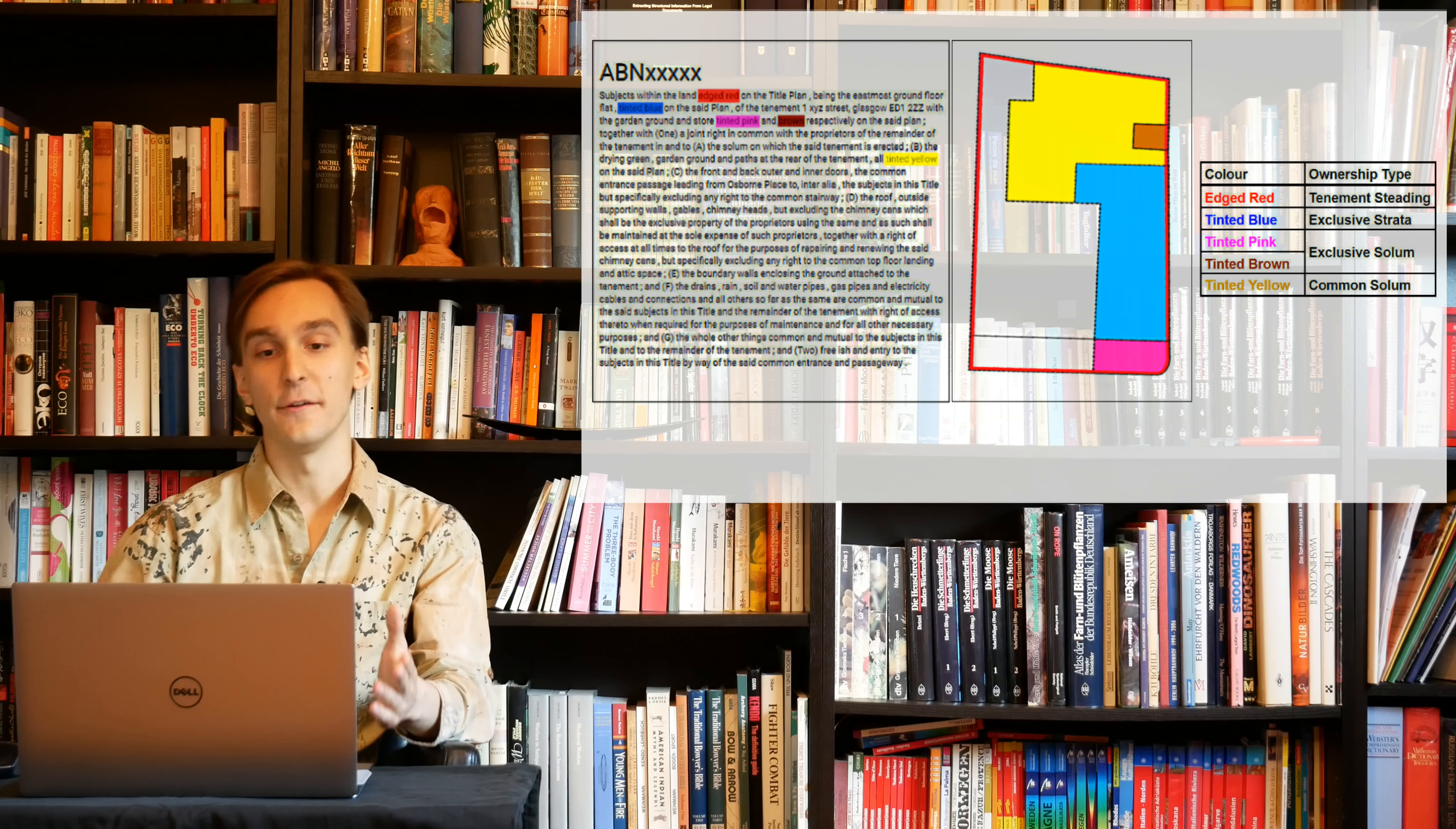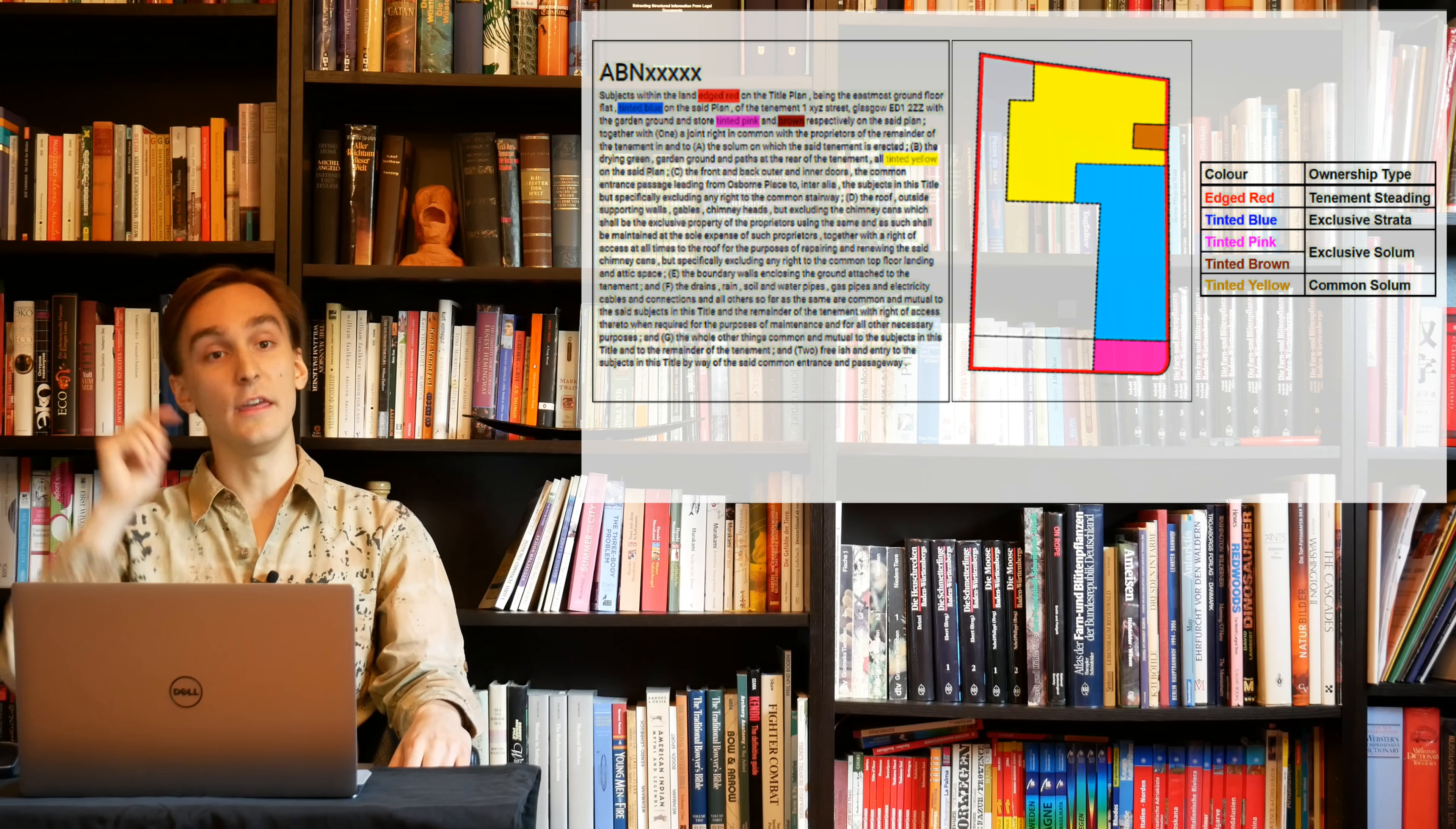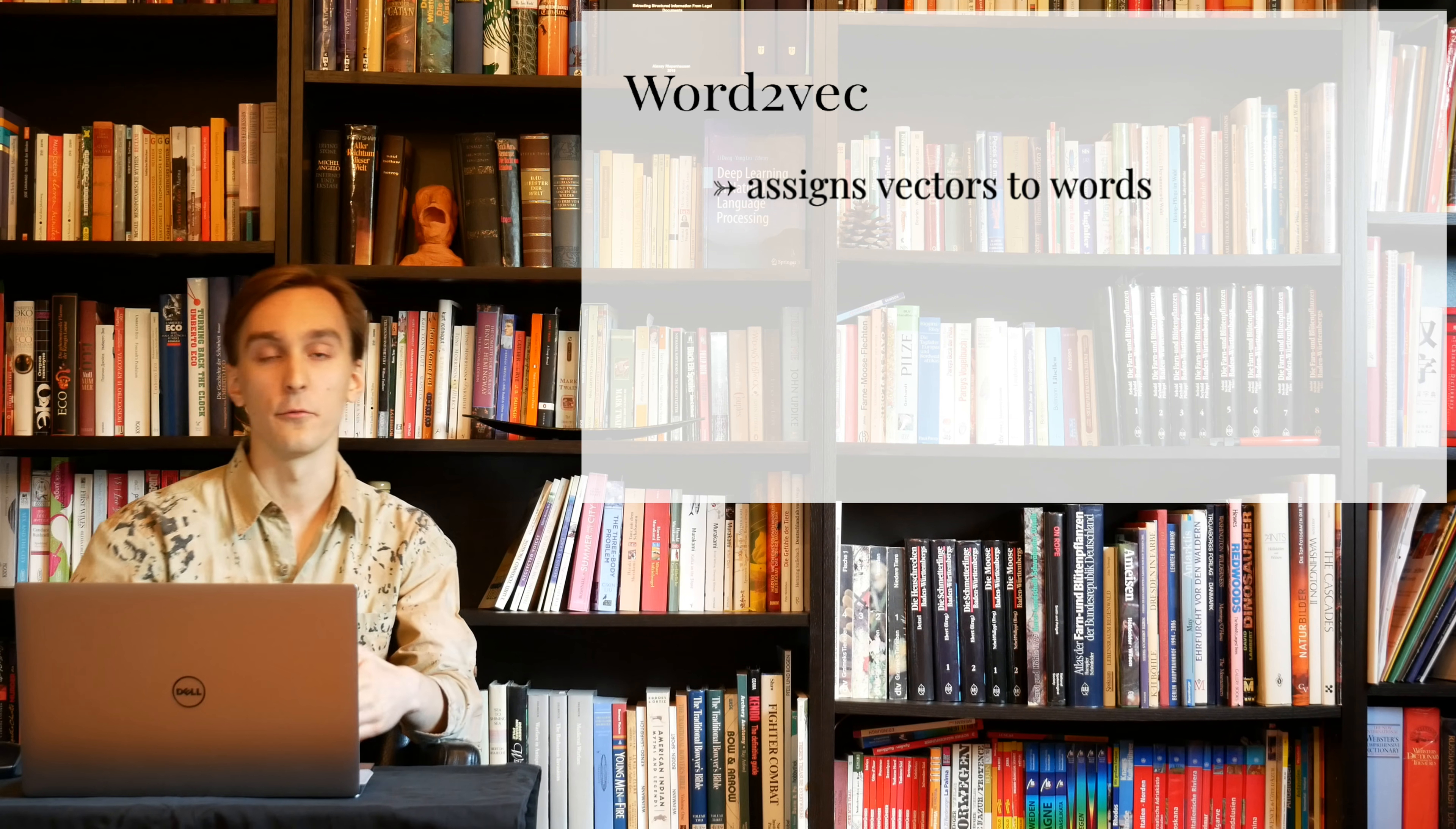Now the big challenge here is that there is no direct link between the colour pairs and their types of ownership. That information is hidden within the context and a person who's trained in Scottish legal terminology can actually read through the documents and will be able to understand what the individual colours actually represent in terms of ownership. But if you take a computer, a computer has absolutely no idea what any of this means or any of this represents, let alone legal terminology in Scotland. So we had to come up with a model that actually does allow the computer to learn these particular concepts.